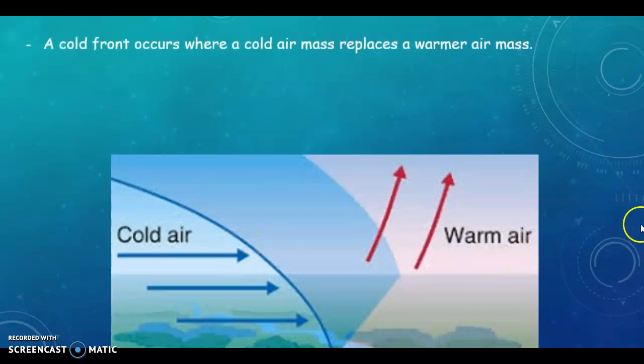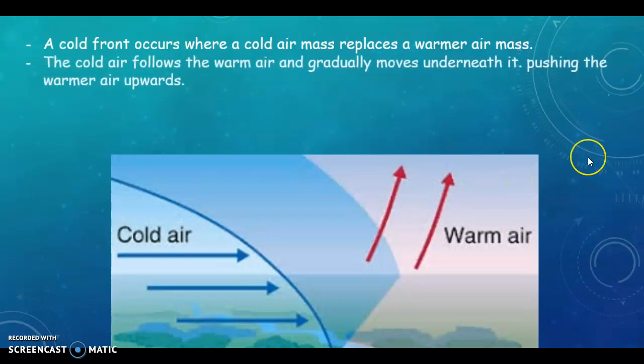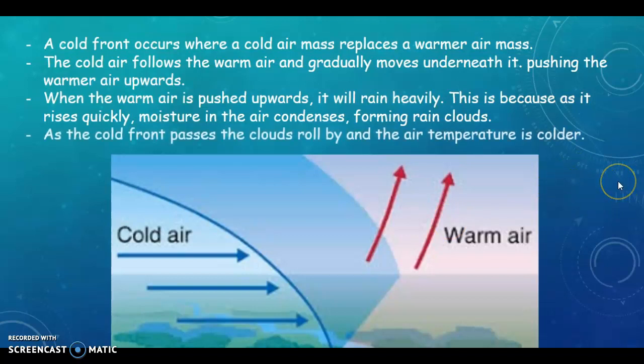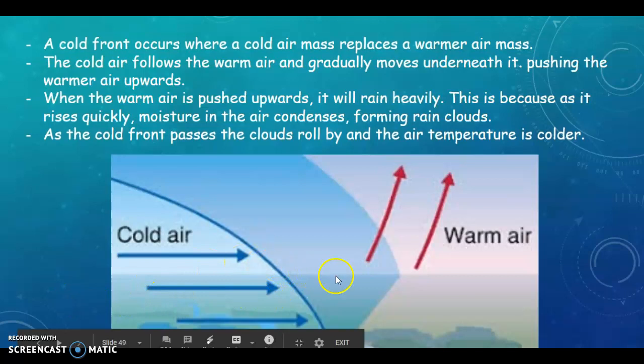When a cold front occurs where a cold air mass replaces a warm air mass, the cold air follows the warm air and gradually moves underneath it, pushing the warm air upwards. And when the warm air is pushed upwards, it will rain heavily. It's because it condenses quickly as it rises and moisture in the air condenses, forming rain clouds. And as the cold air passes, the clouds roll on and the air temperature gets a little bit colder.